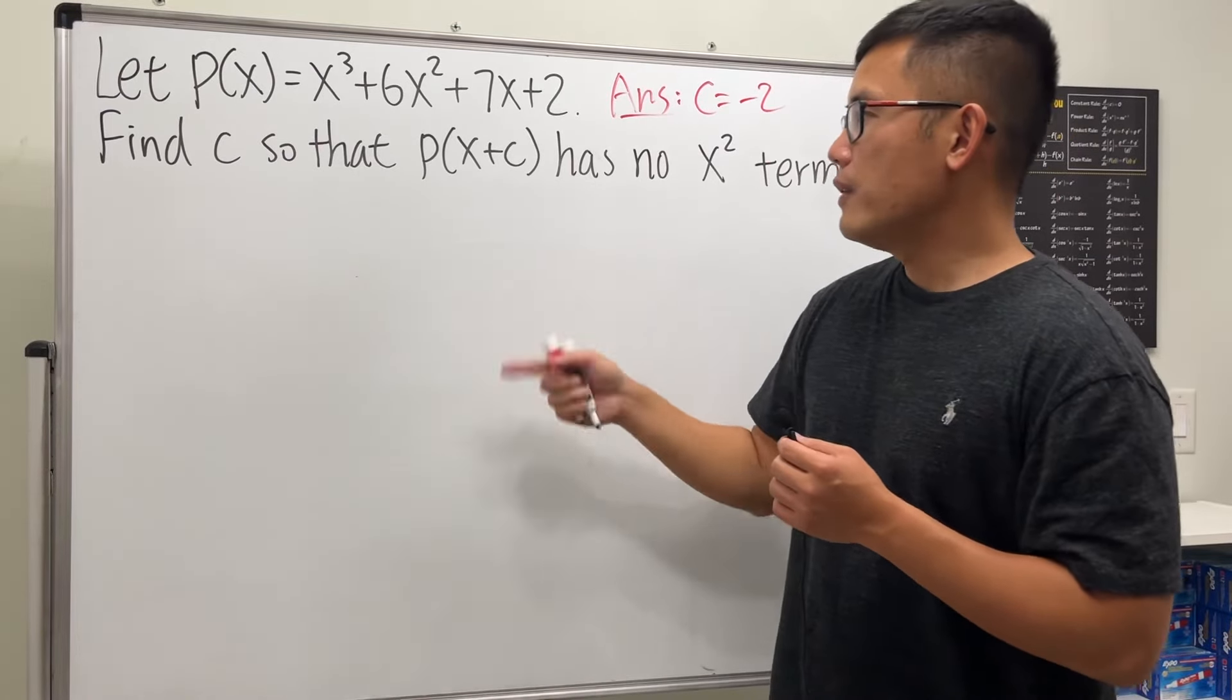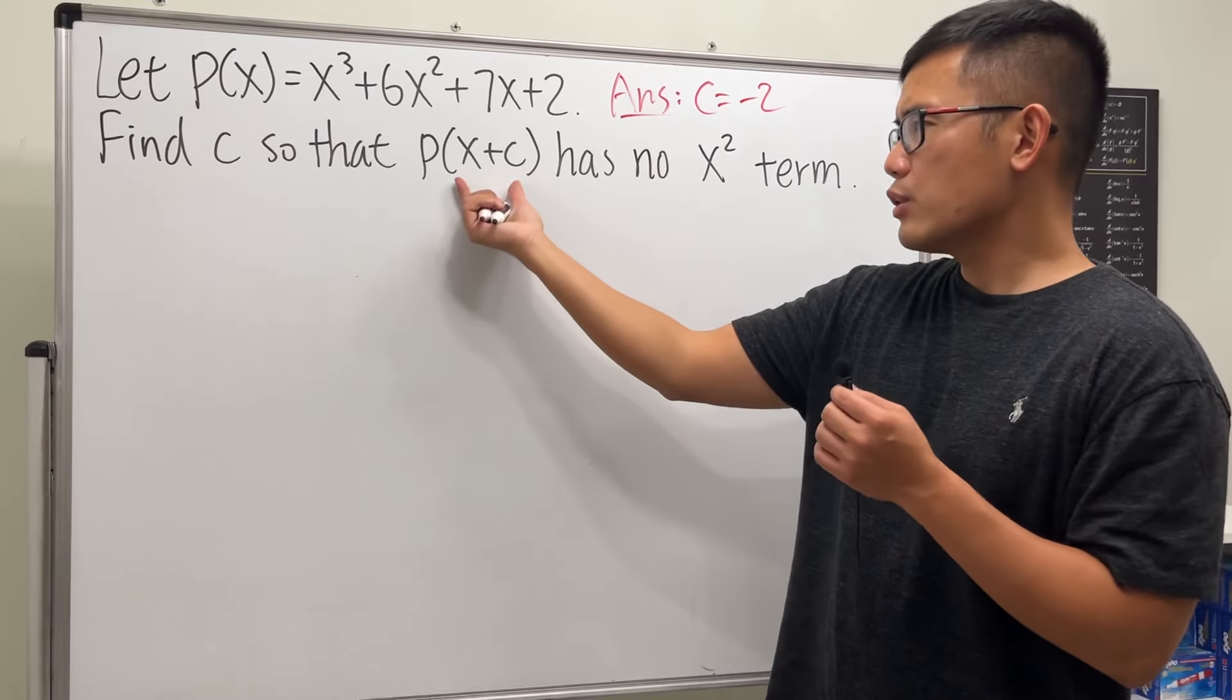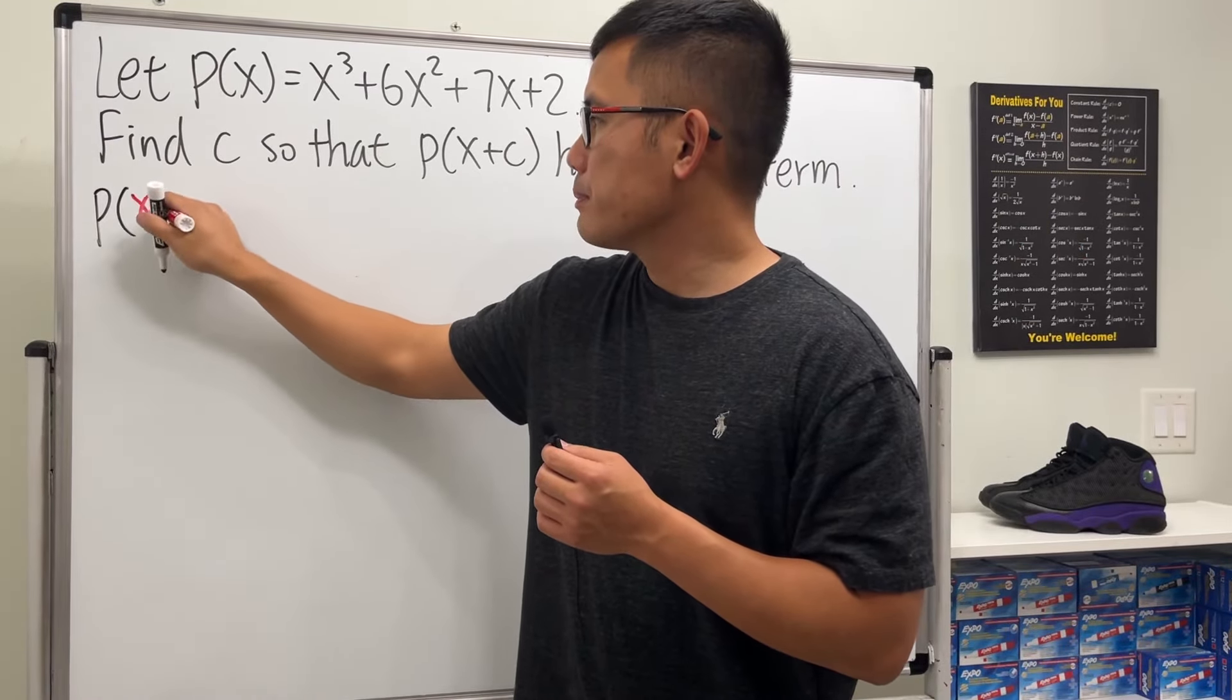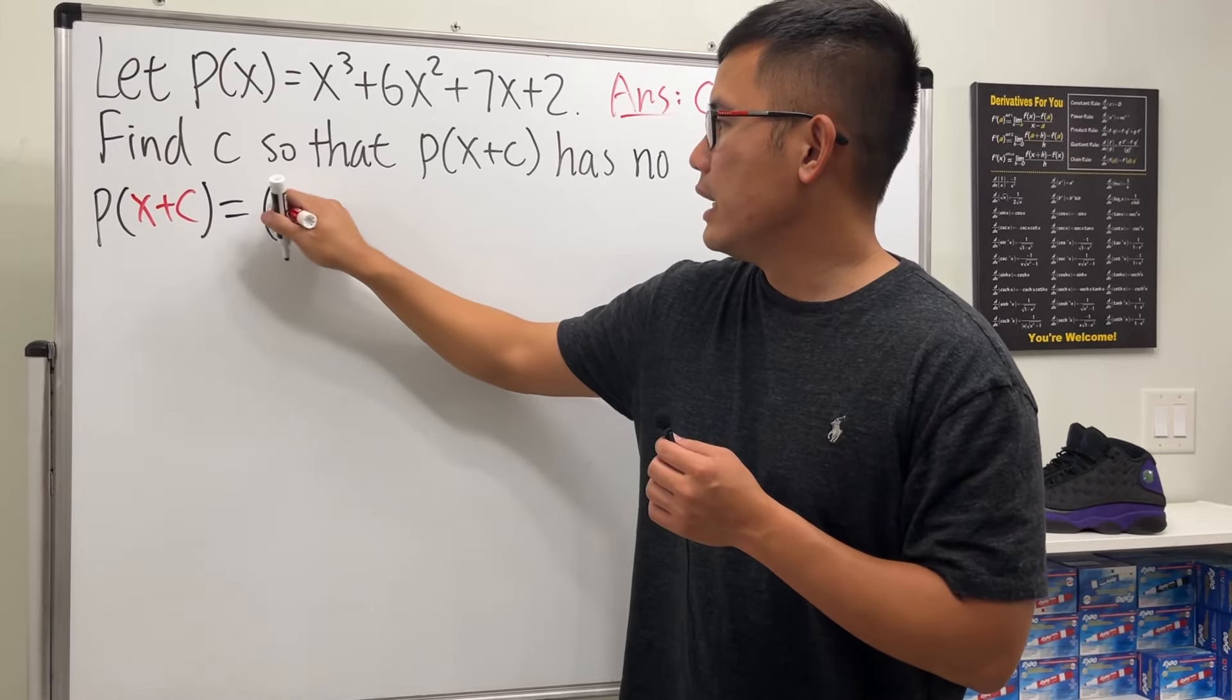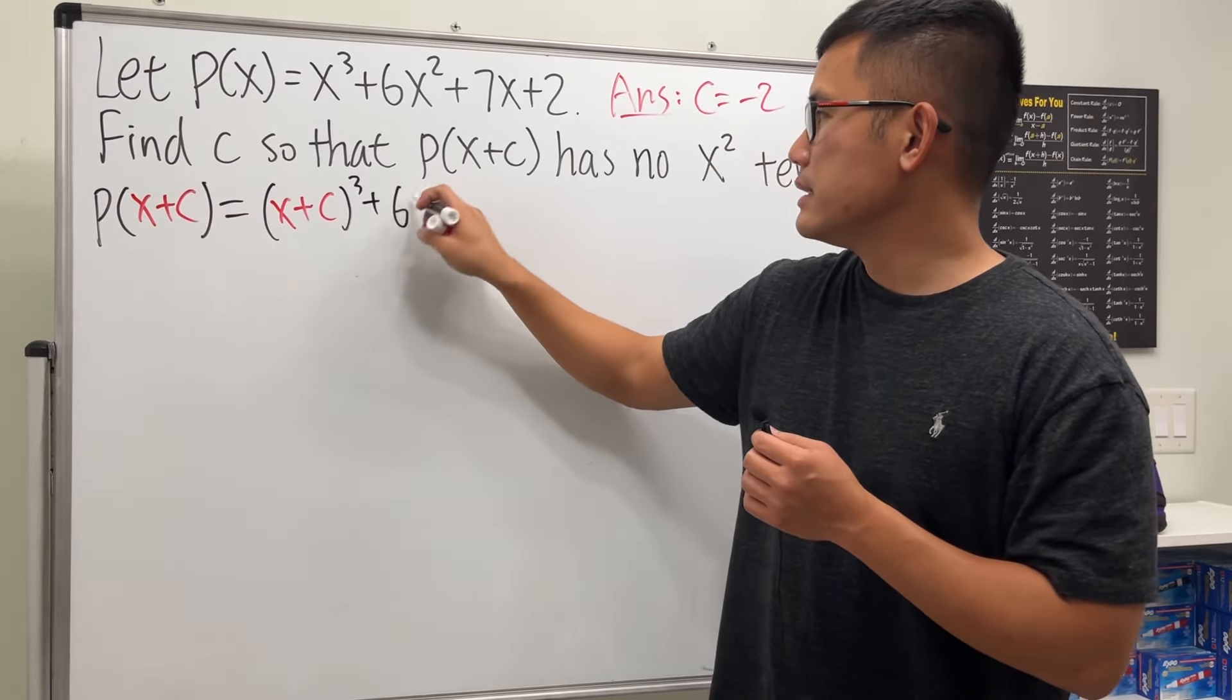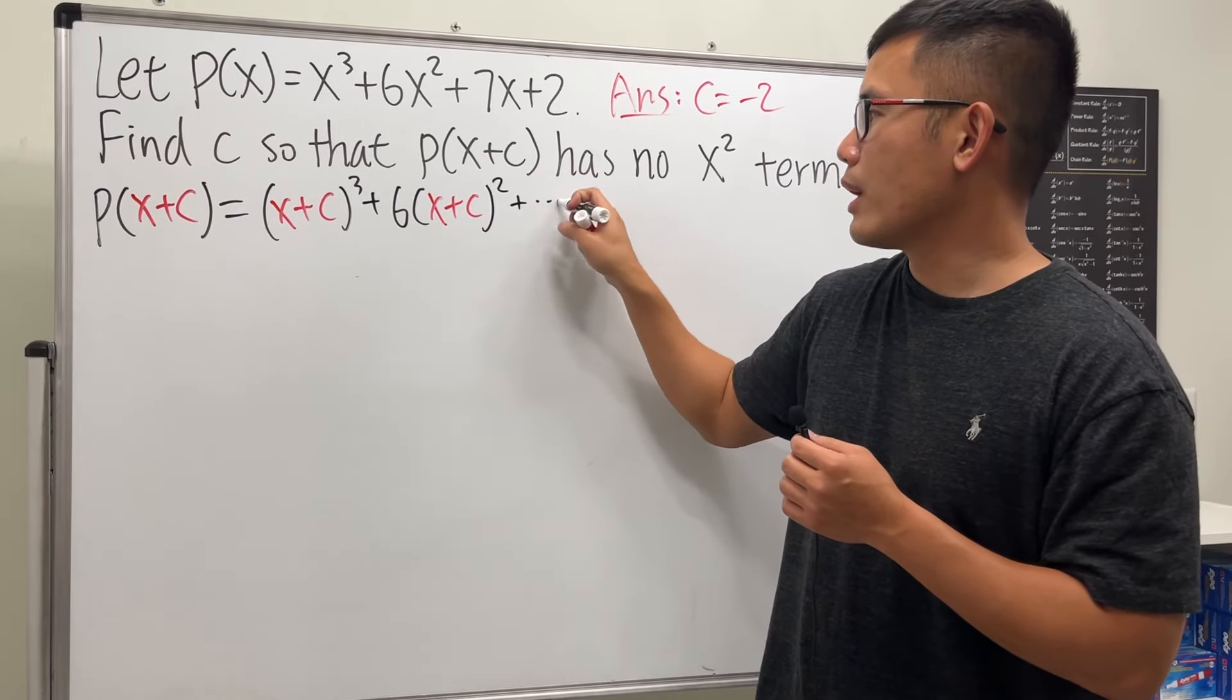First, we want P(x+c) to have no x² term, so let's go ahead and figure out what P(x+c) is. P(x+c) means we put x+c into here, here, and here, so we get (x+c)³ + 6(x+c)² and so on. We don't care about the rest because all we care about is the x² term.